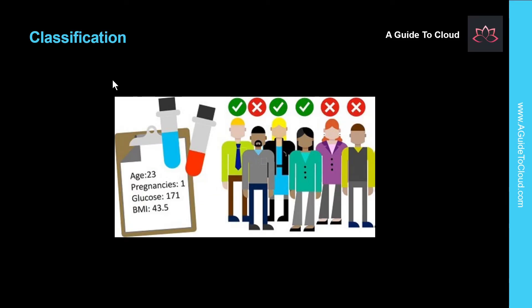Let's understand classification. Classification is a form of machine learning used to predict which category or class an item belongs to. For example, a health clinic might use characteristics of a patient such as age, weight, blood pressure, and so on to predict whether the patient is at risk of diabetes. The label is a classification of either zero or one representing non-diabetic or diabetic. Like regression, classification is an example of supervised machine learning in which you train a model using data that includes both the features and known values for the label so that the model learns to fit the features to the label. After training has been completed, you can use the trained model to predict labels for new items for which the label is unknown.